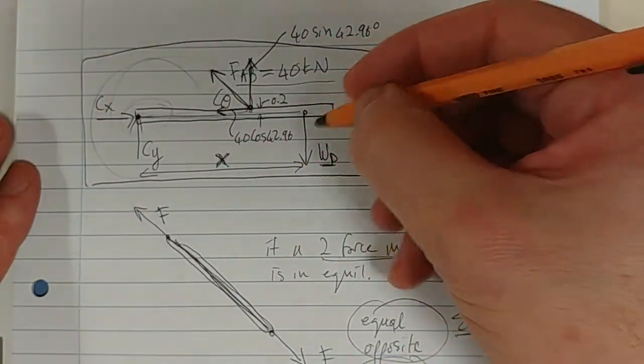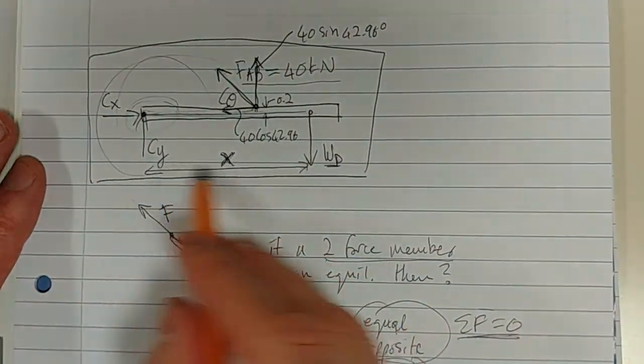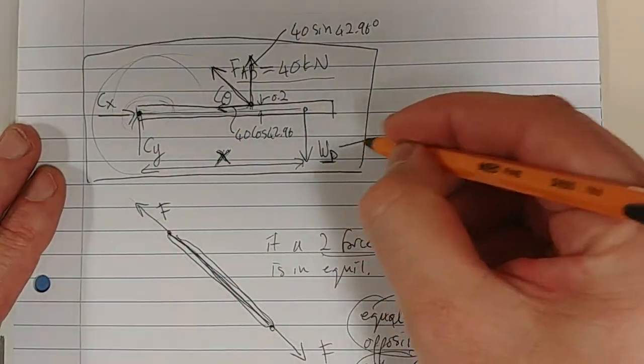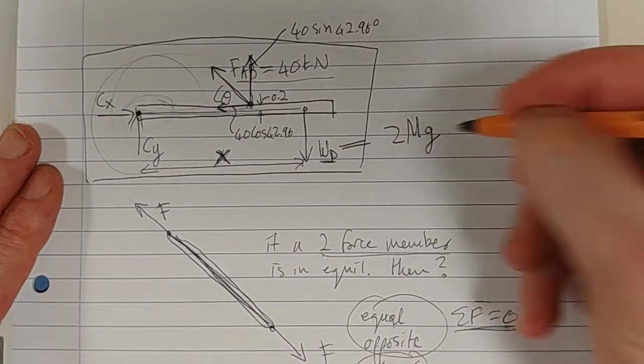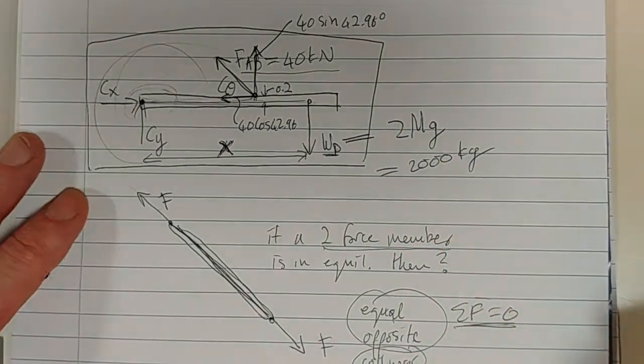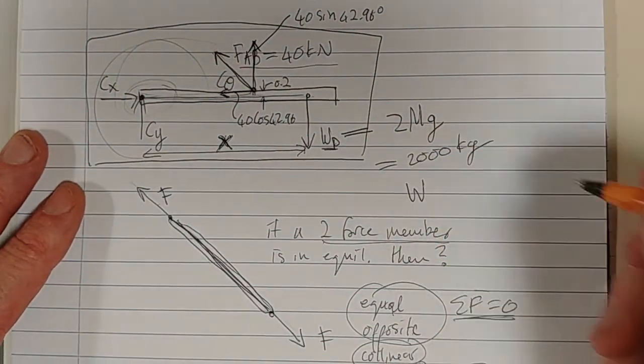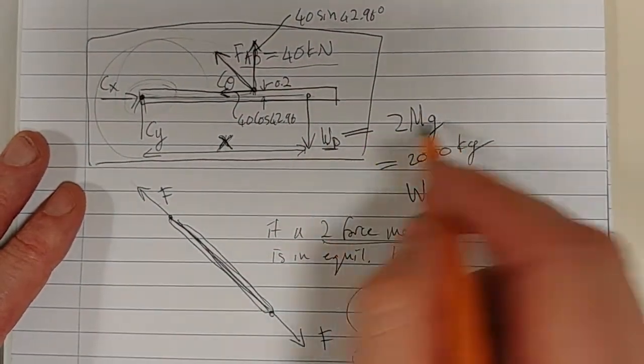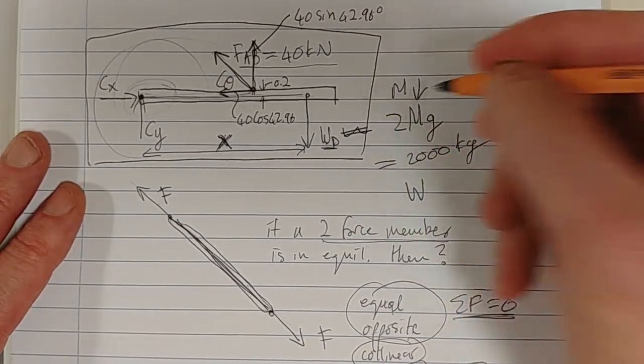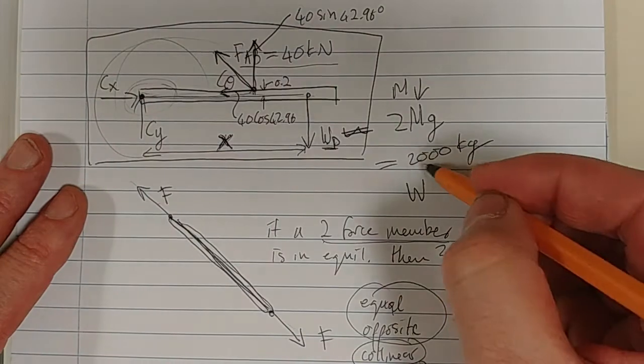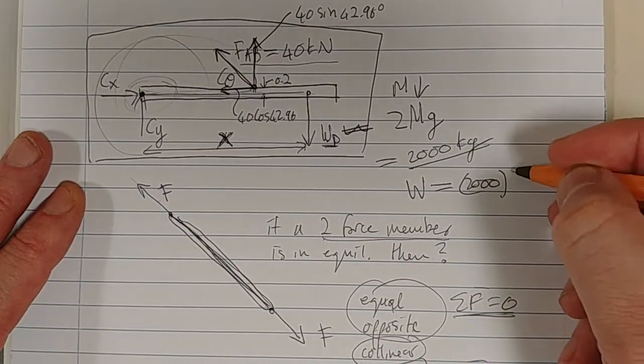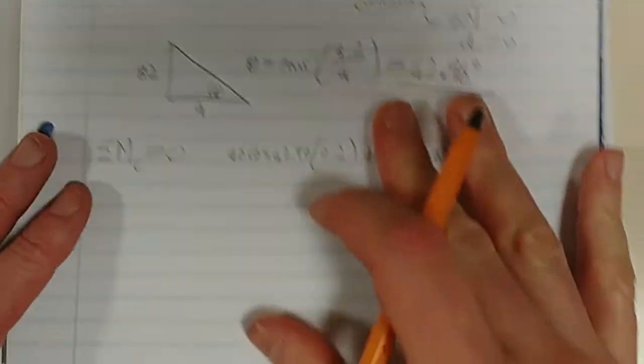And then we've got this weight acting down here at a moment arm of X. And that is essentially what we're looking for. And this weight, they said, was 2 megagrams, which we know is 2,000 kilograms. So the weight, sorry, I said the weight is 2 megagrams. That's incorrect. That is the mass. The mass is 2 megagrams, which is 2,000 kilograms. The weight is 2,000 times 9.81. That's what it is.